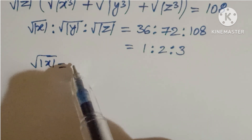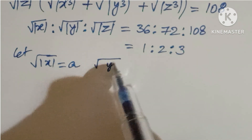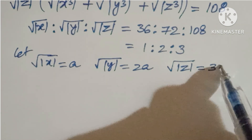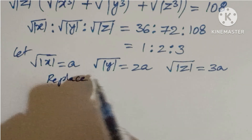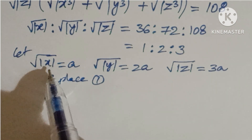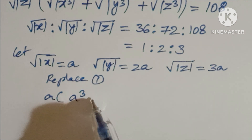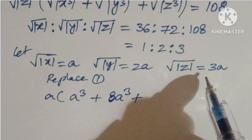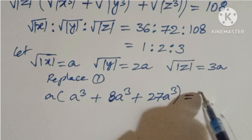Let √(|x|) = a, √(|y|) = 2a, and √(|z|) = 3a. Now replace these values in equation one: a · a³ + 2a · (2a)³ + 3a · (3a)³ = a⁴ + 8a⁴ + 27a⁴ = 36.